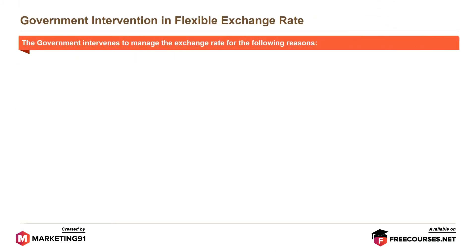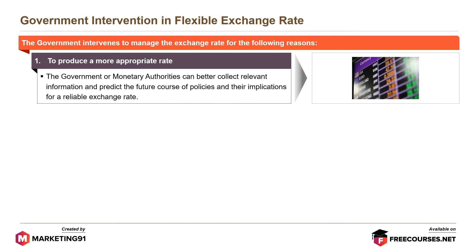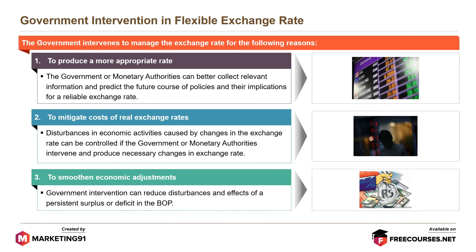The government intervenes to manage the exchange rate for the following reasons: to produce a more appropriate rate, as government or monetary authorities can better collect relevant information and predict future policies and their implications for a reliable exchange rate; to mitigate costs of real exchange rate disturbances in economic activities caused by changes in the exchange rate; and to smoothen economic adjustments, reducing disturbances and effects of a persistent surplus or deficit in the BOP.